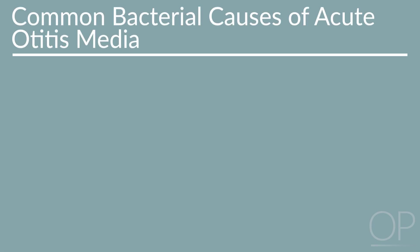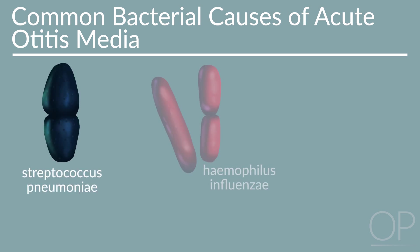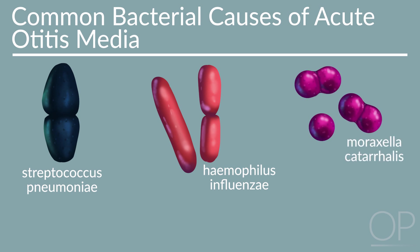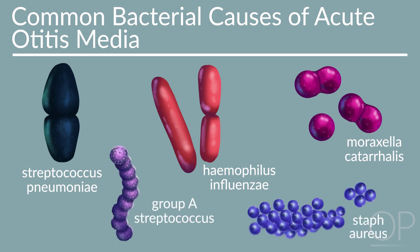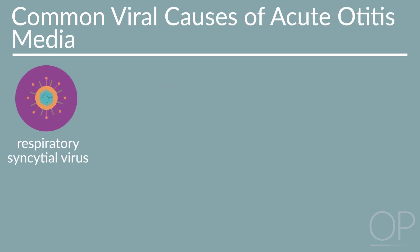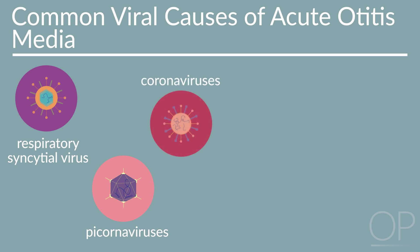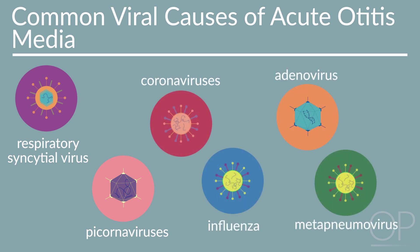The three most common bacteria in acute otitis media are Streptococcus pneumoniae, non-typable Haemophilus influenzae, and Moraxella catarrhalis. Other less common bacteria include Group A Streptococcus and Staph aureus. Viruses commonly seen include respiratory syncytial virus, picornaviruses, coronaviruses, influenza, adenovirus, and metapneumovirus.